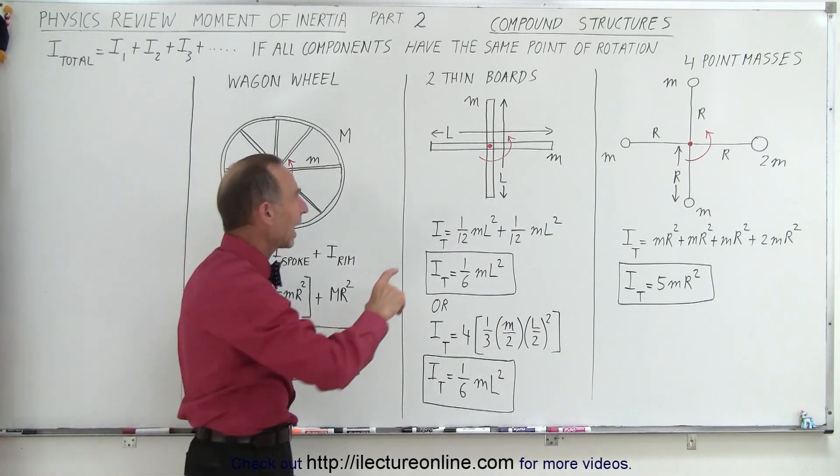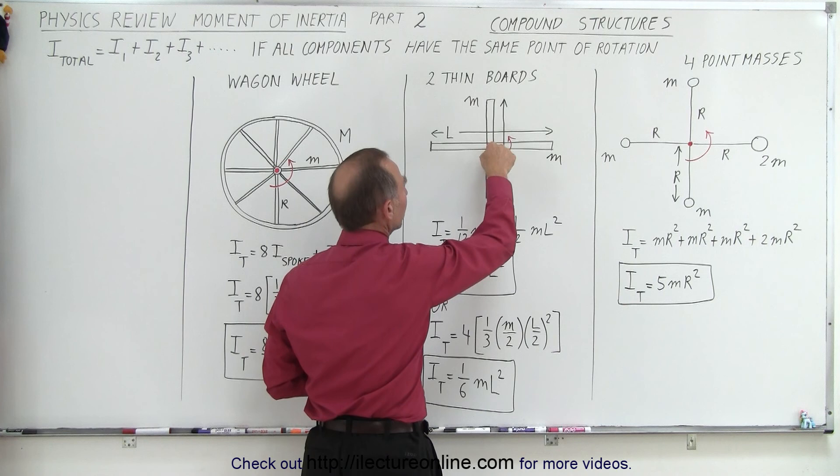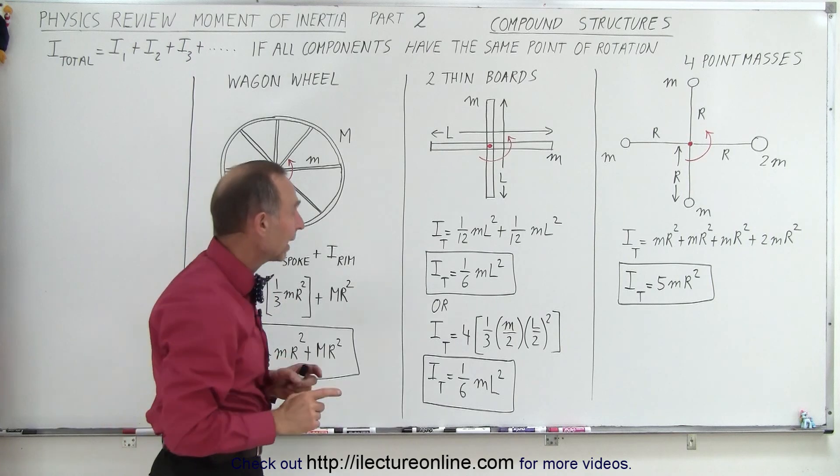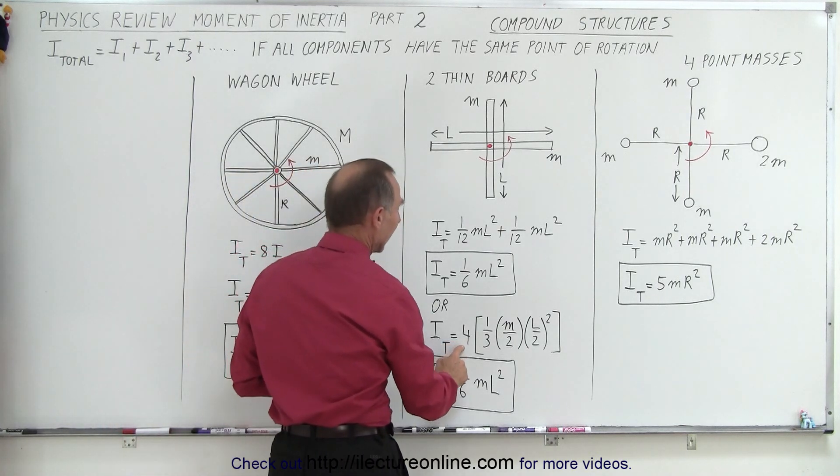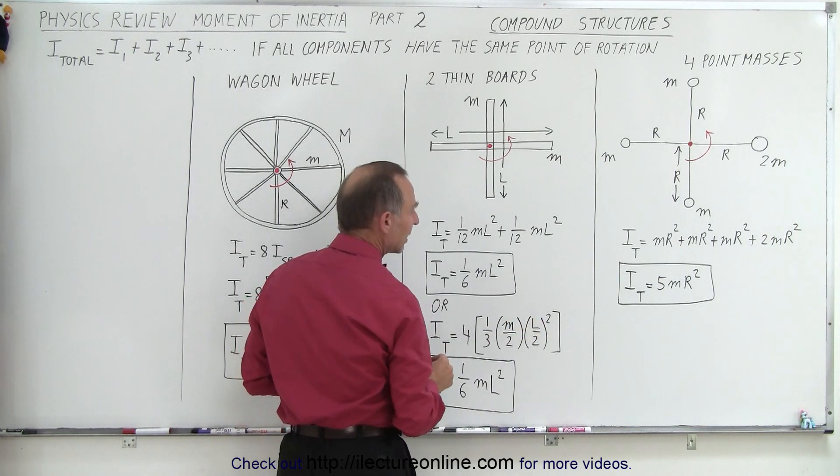We could also think of it as four separate boards, all rotating about the same point of rotation, but then you would have the end of the board as the point of rotation. In that case, there's four of them, and therefore it would be 1/3 the mass of each piece times the length squared.